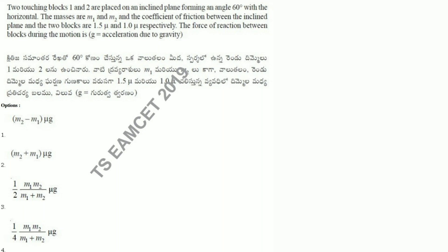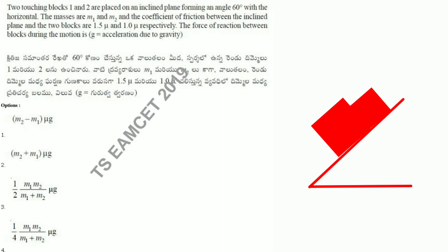Next question: we have 2 blocks on an inclined plane at 60 degrees. The coefficient of friction between the inclined plane and the blocks is 1.5 and 1 respectively. To solve this, apply force analysis. As in the last video, use variables — draw all the force dimensions first.